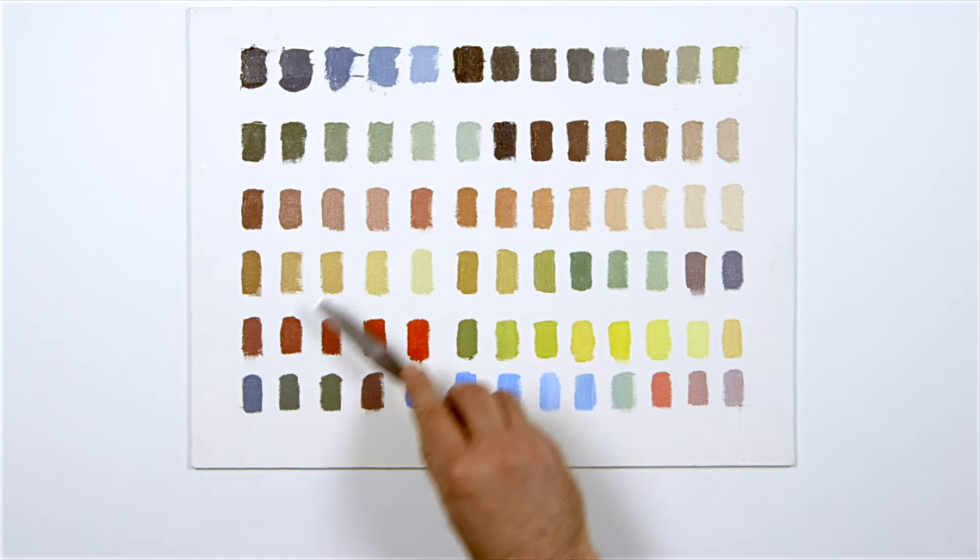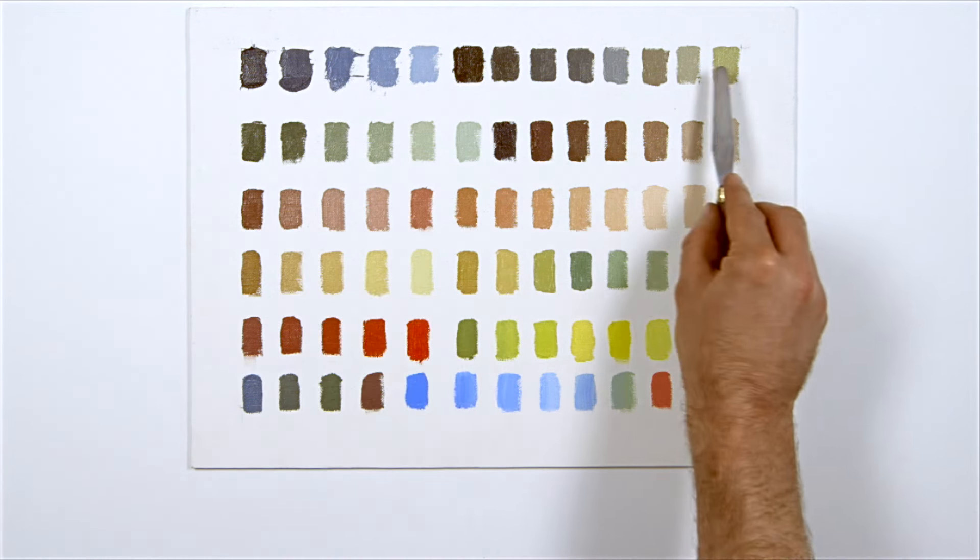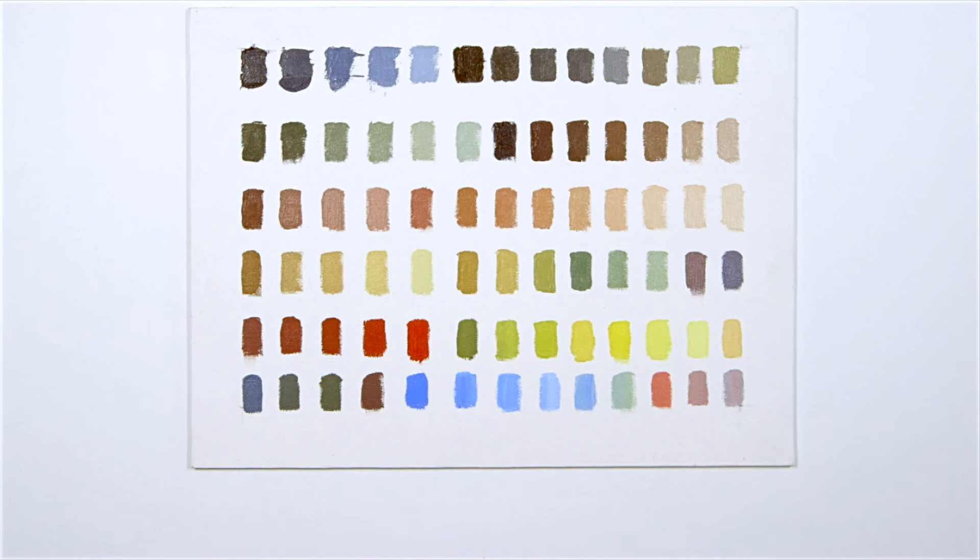It's amazing but everything on this panel has been made with this particular triad of red, yellow and blue combined with white. By limiting the choice the process becomes intuitive and you'll soon be able to create the chromatic greys you'll encounter when working from observation.